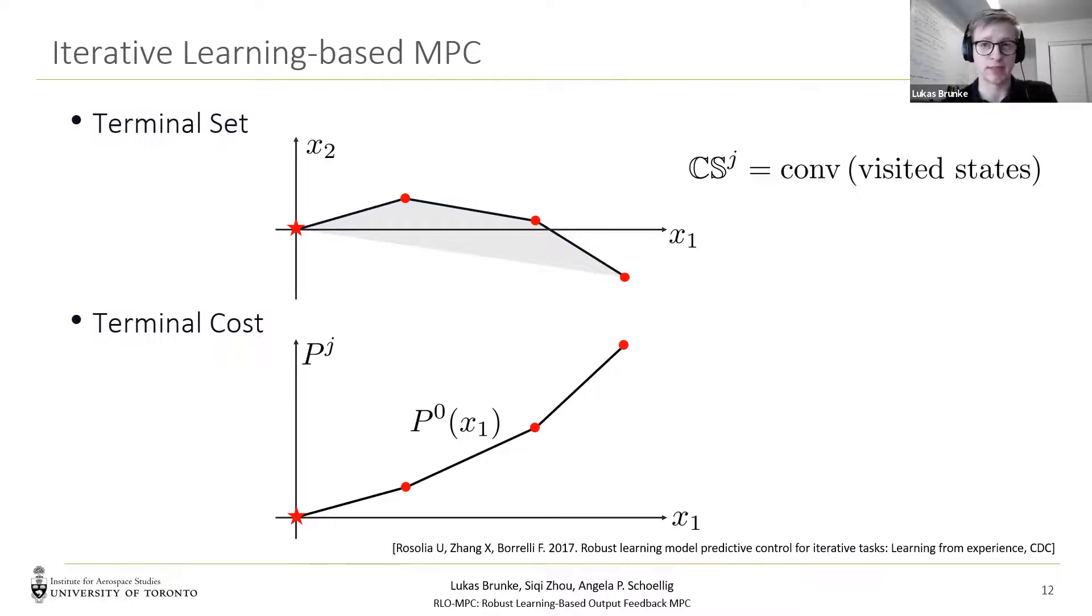Now using our initial terminal set and terminal cost function, it allows the enlargement of the terminal constraint set in the next iteration and the improvement of the terminal cost in future iterations as it reaches lower values.